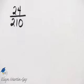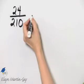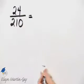So to see if there are any common factors, let's write the prime factorization of each number. In other words, let's write each number as a product of primes.